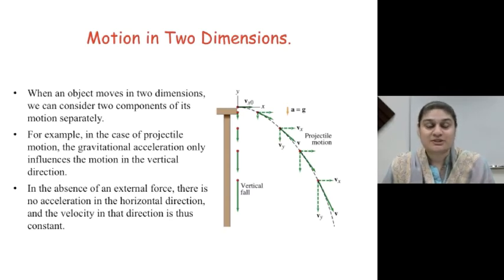Motion in two dimensions. When an object moves in two dimensions, we can consider two components of its motion separately. For example, the case of a projectile motion, the gravitational acceleration only influences the vertical direction. In the absence of external forces, there is no acceleration in the horizontal direction, and the velocity in that direction is thus constant.